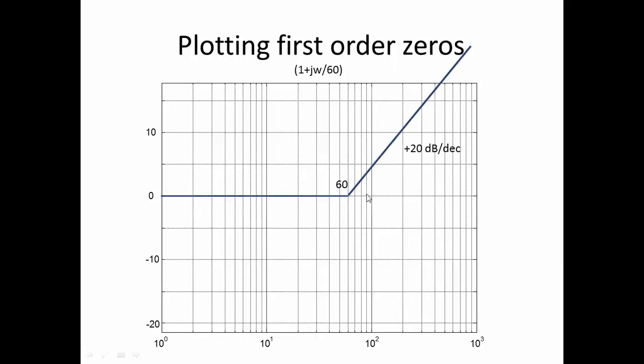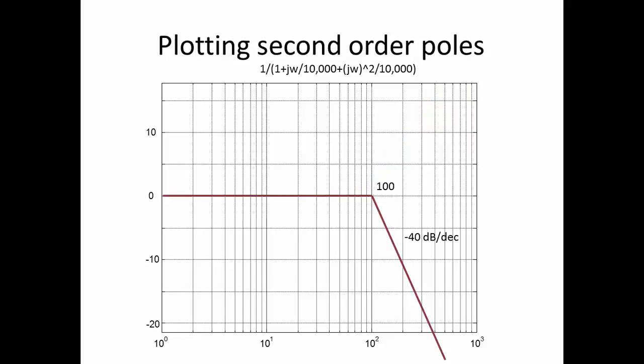The first order zero at 60 radians per second goes up at 20 dB per decade above 60. The second order pole is at 100, the square root of the 10,000, and it rolls off at minus 40 dB per decade. I'm ignoring the impact of it being an underdamped system at this point.